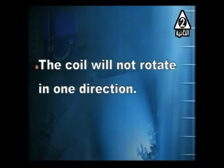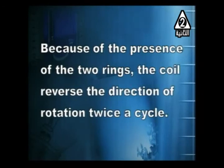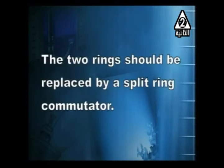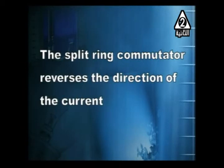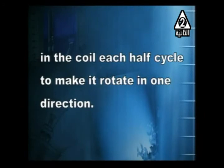The coil will not rotate in one direction because of the presence of the two rings — the coil reverses direction of rotation twice per cycle, once each half cycle. To correct this, the two rings should be replaced by a split-ring commutator. The function of the commutator in the motor is to reverse the direction of the current in the coil each half cycle, so that the coil rotates in one direction continuously.